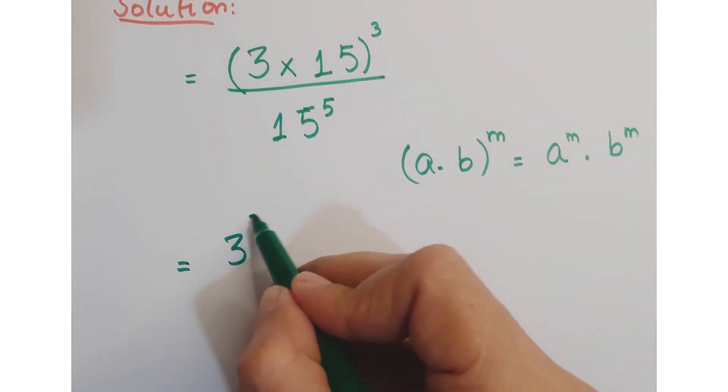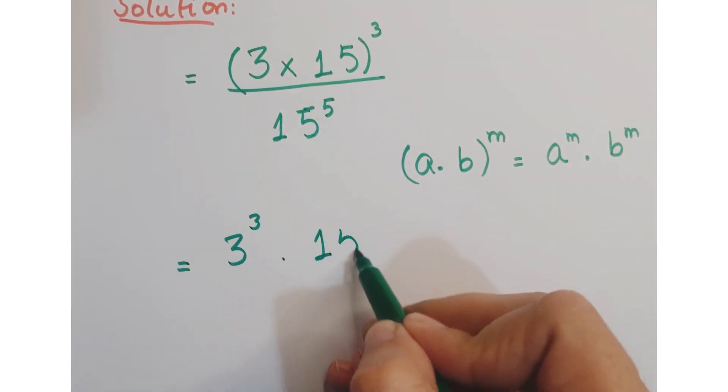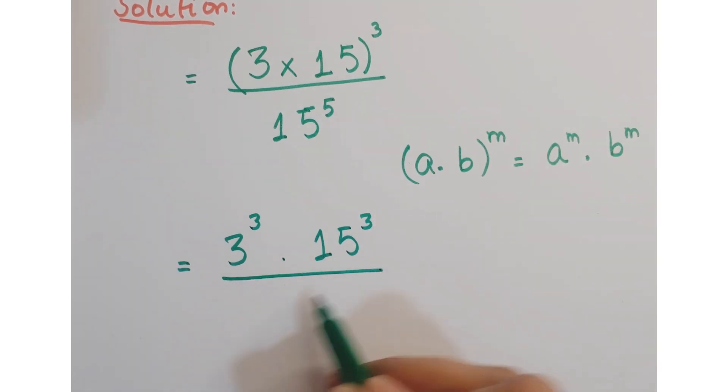So we can write this as 3 to the power 3 into 15 to the power 3 upon 15 to the power 5.